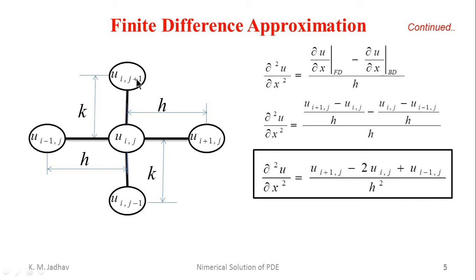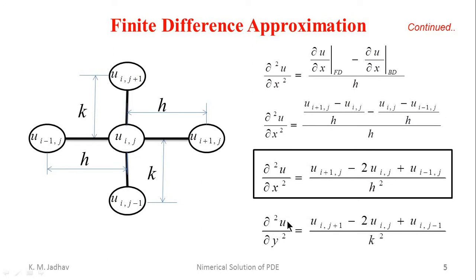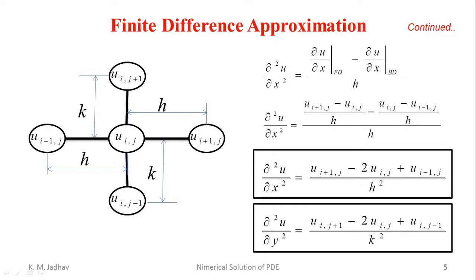Similarly, we can write the second-order approximation of u in the y-direction. So ∂²u/∂y² = (u[i,j+1] − 2u[i,j] + u[i,j-1]) / k², where k is the step size in the y-direction. This is the second-order approximation of u with respect to y.